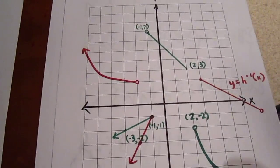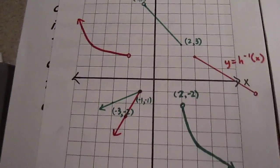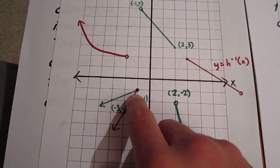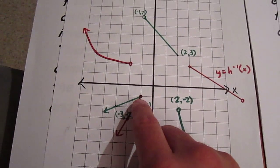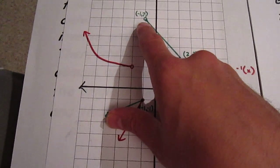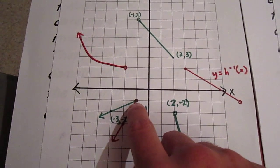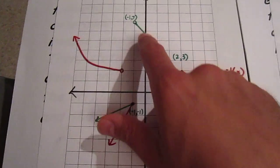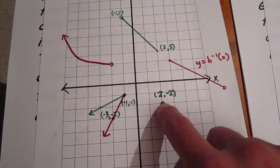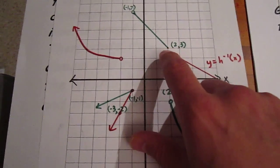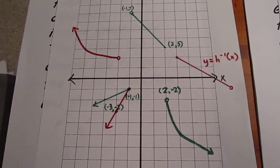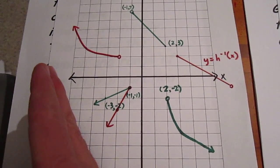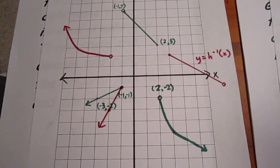Now we're asked to determine the domain and range of each of these curves. Let's start with the green curve. The domain goes to ever-decreasing values of x. There's a closed circle at an x value of negative 1, an open circle here at negative 1, but the next value of negative 1 is included in the domain due to this point. We include all values up to 2. Then there's an open circle at x equals 2, but 2 is in the domain because of this point, and then we go to ever-increasing values of x. So the domain of the green function, the original one, is the entire x-axis.